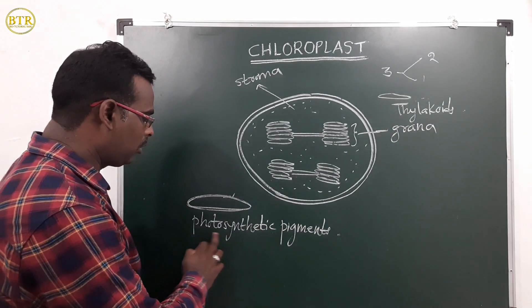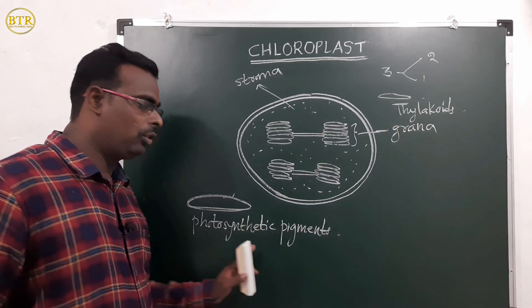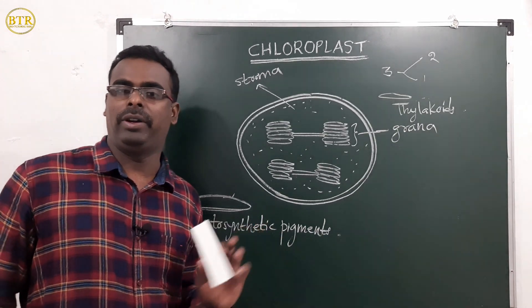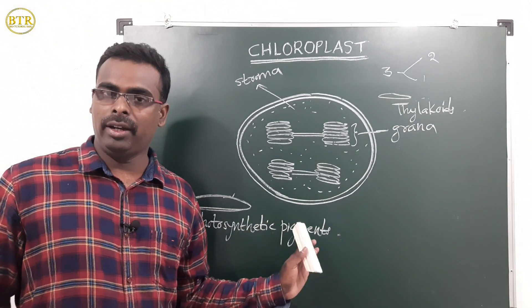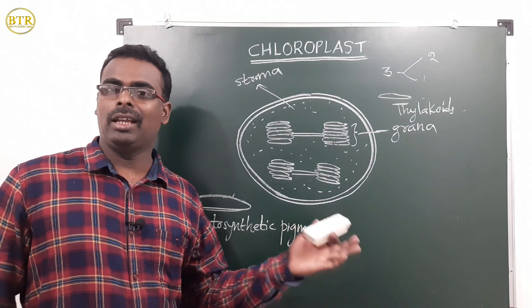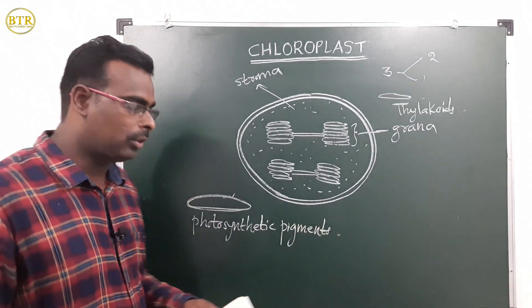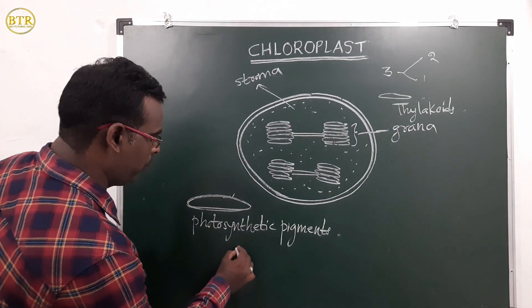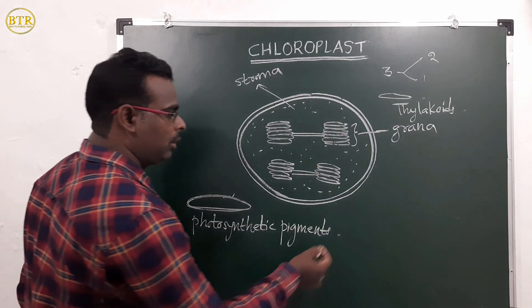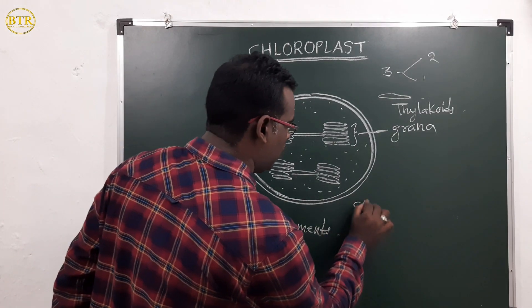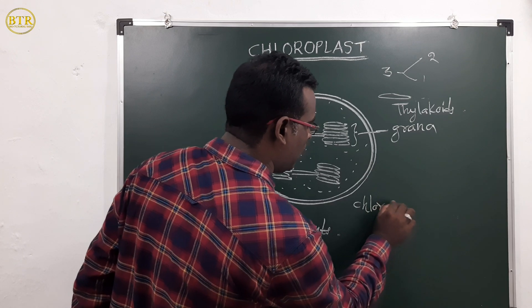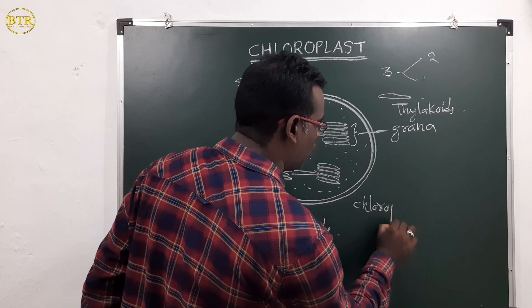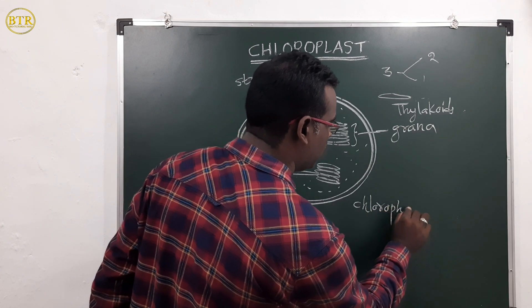These substances found in the thylakoid membrane capture sunlight energy, and they are called photosynthetic pigments. The green-colored pigment is called chlorophyll.